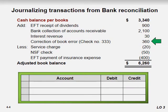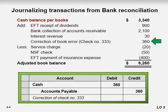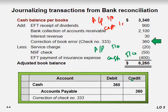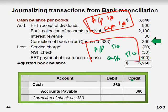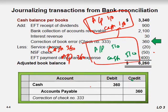For the book error correction: we previously recorded the entry as Accounts Payable to Cash for 510, but the correct amount was 150 — we paid the supplier 150. Instead, we recorded 510 due to a human error. The difference of 360 needs to be reversed. So the reverse entry would be Cash to Accounts Payable for 360.